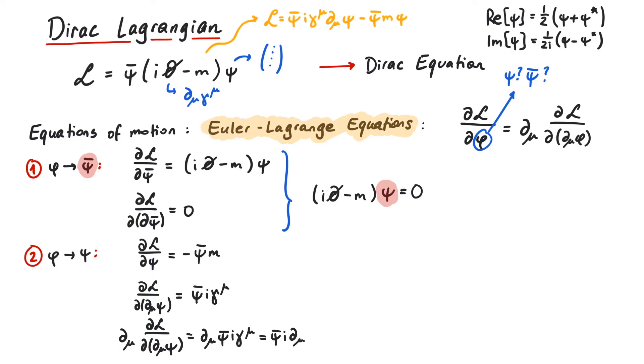So this yields d mu psi bar i gamma mu. If we want to use a fancy notation, we could write this as psi bar d mu i gamma mu, where the arrow on top of the derivative means that we let it act to the left. This can be neatly expressed as psi bar i d slash. And altogether, this leads to psi bar i d slash plus m is equal to zero.